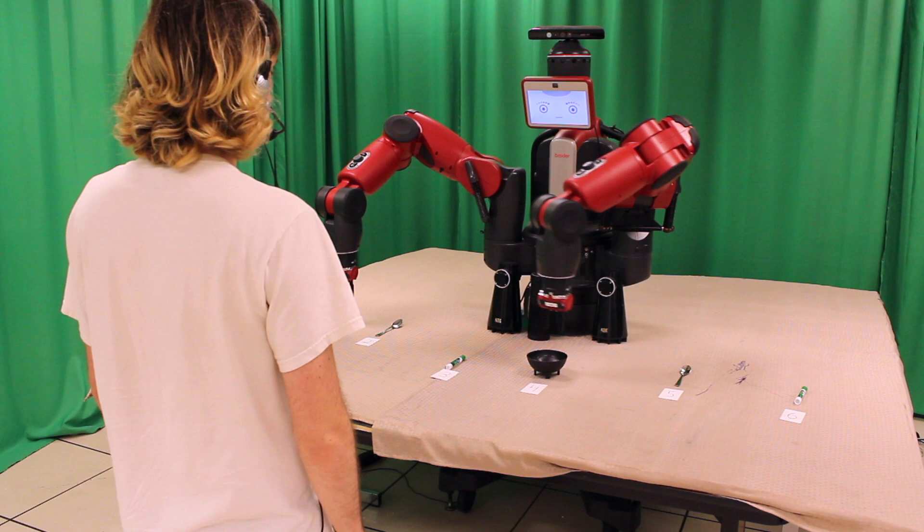In unambiguous situations, our partially observable Markov decision-process-based approach is able to intelligently infer the human's desired object without question asking by fusing language and pointing gesture data in real time.